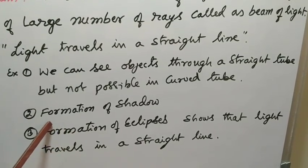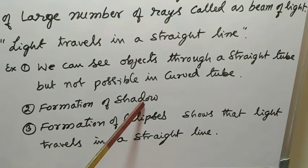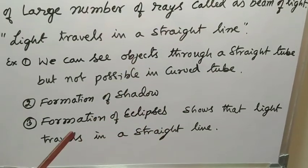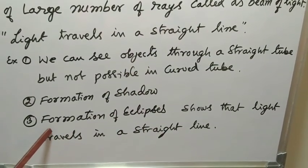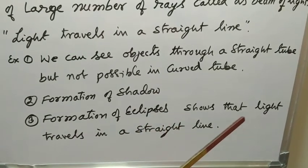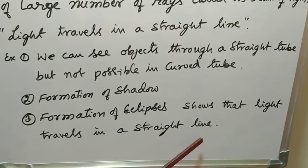Second example: formation of shadows shows that light travels in a straight line. Third example: formation of eclipses shows that light travels in a straight line.